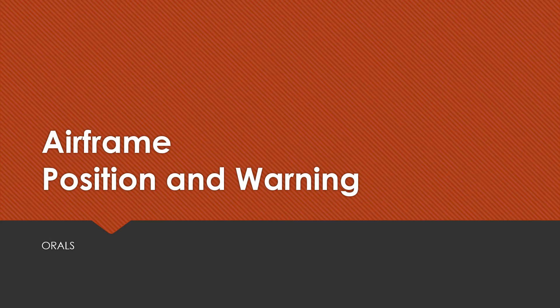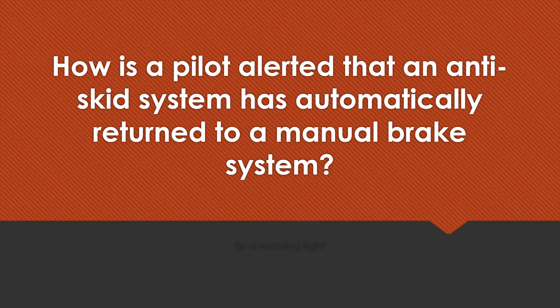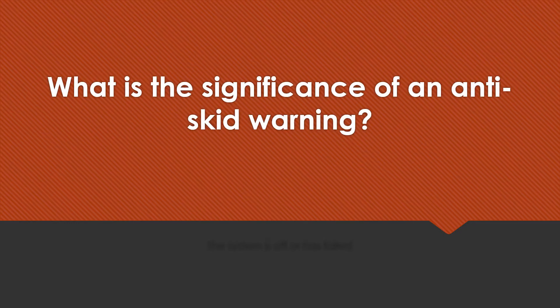Airframe position and warning oral questions. What unit in an anti-skid system generates the anti-skid warning signal? The control unit. How is a pilot alerted that an anti-skid system has automatically returned to a manual brake system? By a warning light. What is the significance of an anti-skid warning? To tell you that the system is off or has failed.